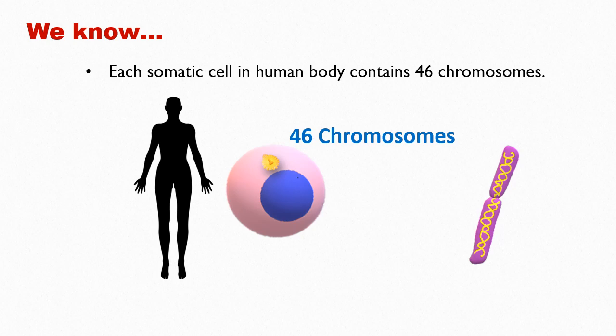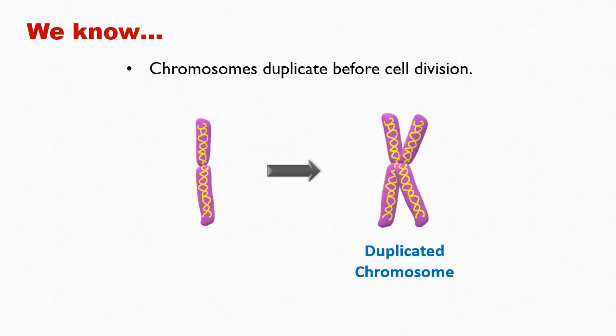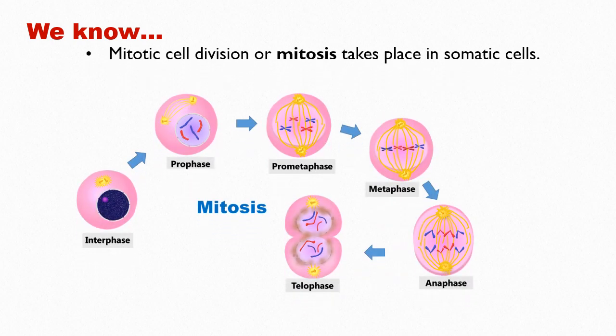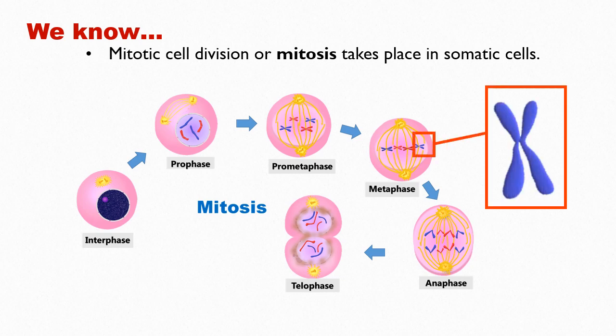Chromosomes are normally present in relaxed or decondensed form. Chromosomes duplicate before cell division. Mitotic cell division or mitosis takes place in somatic cells. Metaphase of mitosis is the stage in eukaryotic organisms when the chromosomes are in their most condensed form. Therefore, this phase is the best phase to count and study the number and morphology of chromosomes.